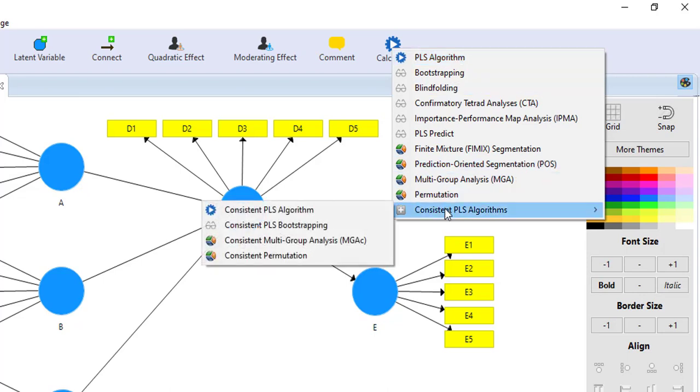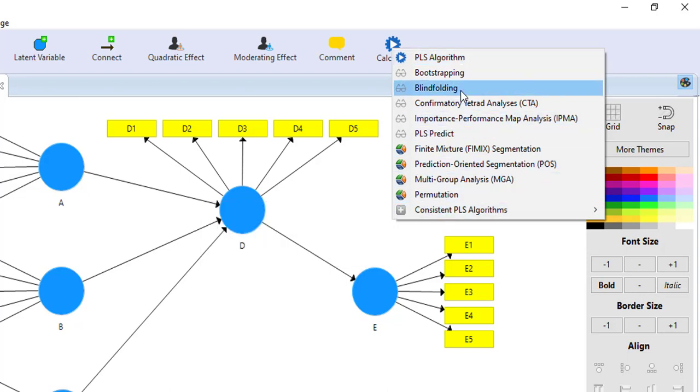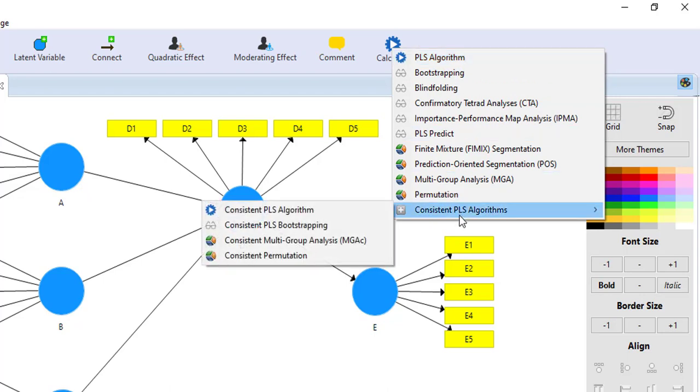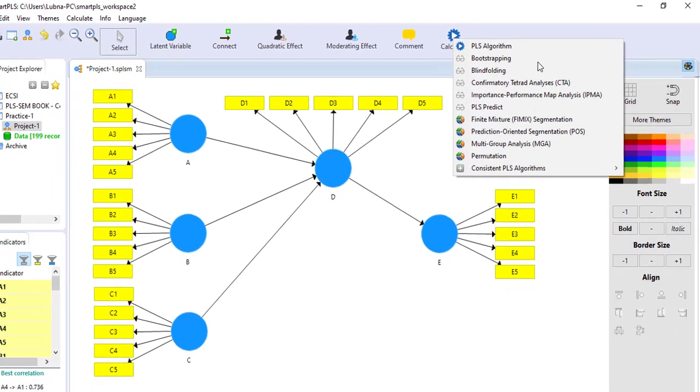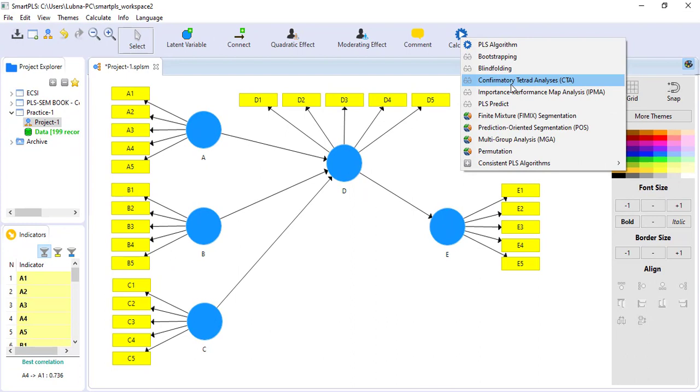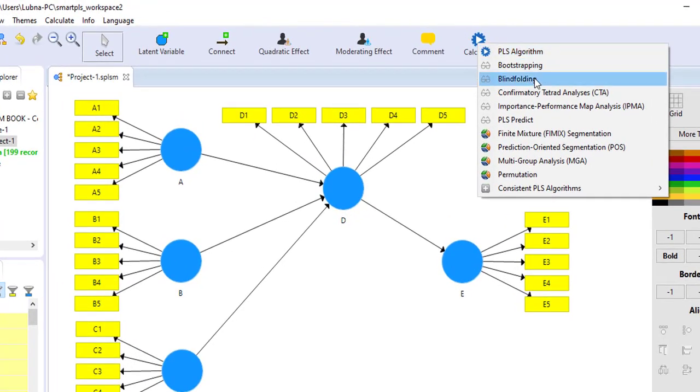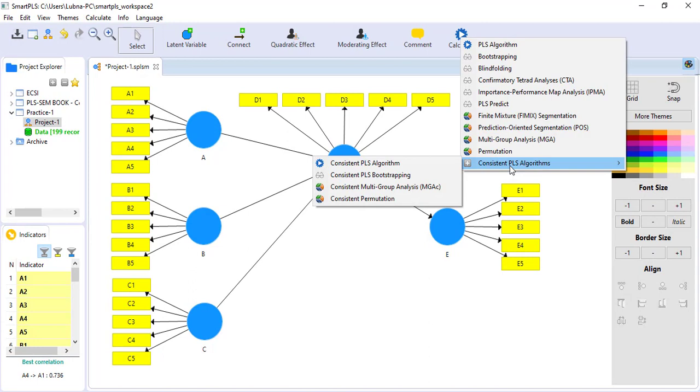For measurement model we normally go for PLS algorithm or consistent PLS algorithm. When your model is reflective you can go to consistent PLS algorithm, but when the model is formative you can go to PLS algorithm. Here my model is reflective therefore I am going to consistent PLS algorithm. Here I have to select consistent PLS algorithm.